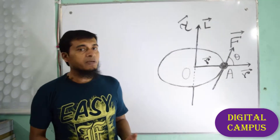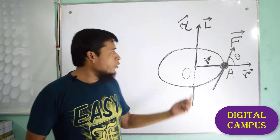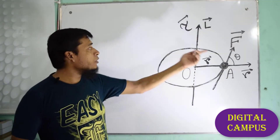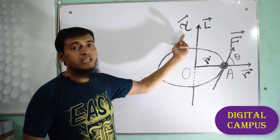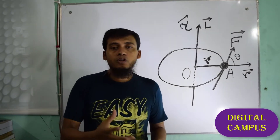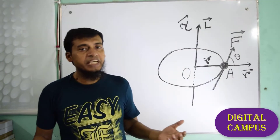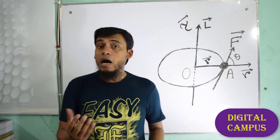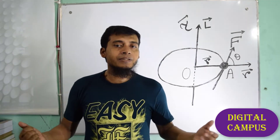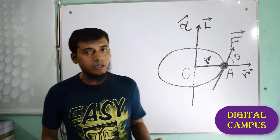Today I am here to discuss the Right Hand Screw Law. We will consider a point, and at that point what is the direction of a vector. Also at any point what is the position vector and cross product of that vector — for these three types of rules we apply the Right Hand Screw Law. So what is the Right Hand Screw Law?